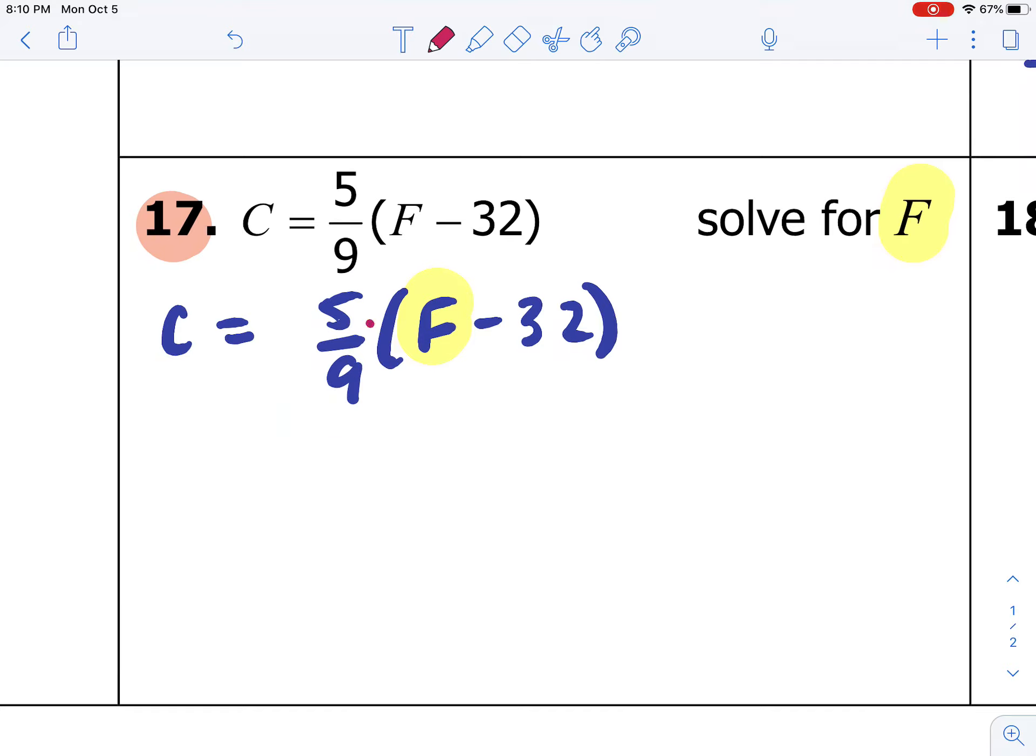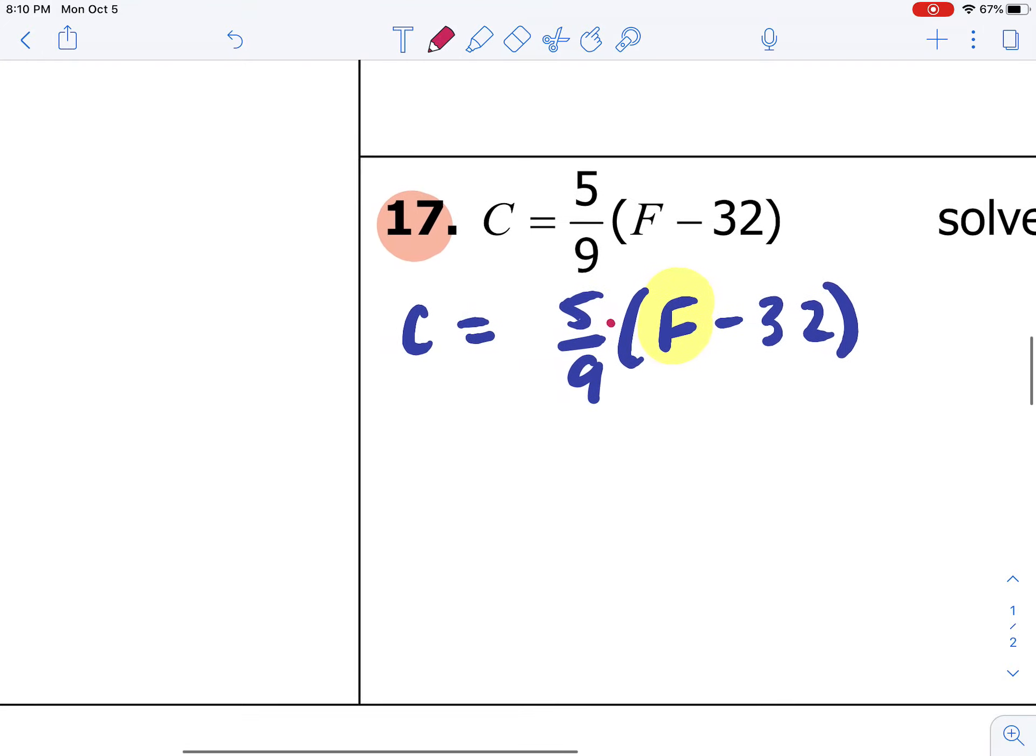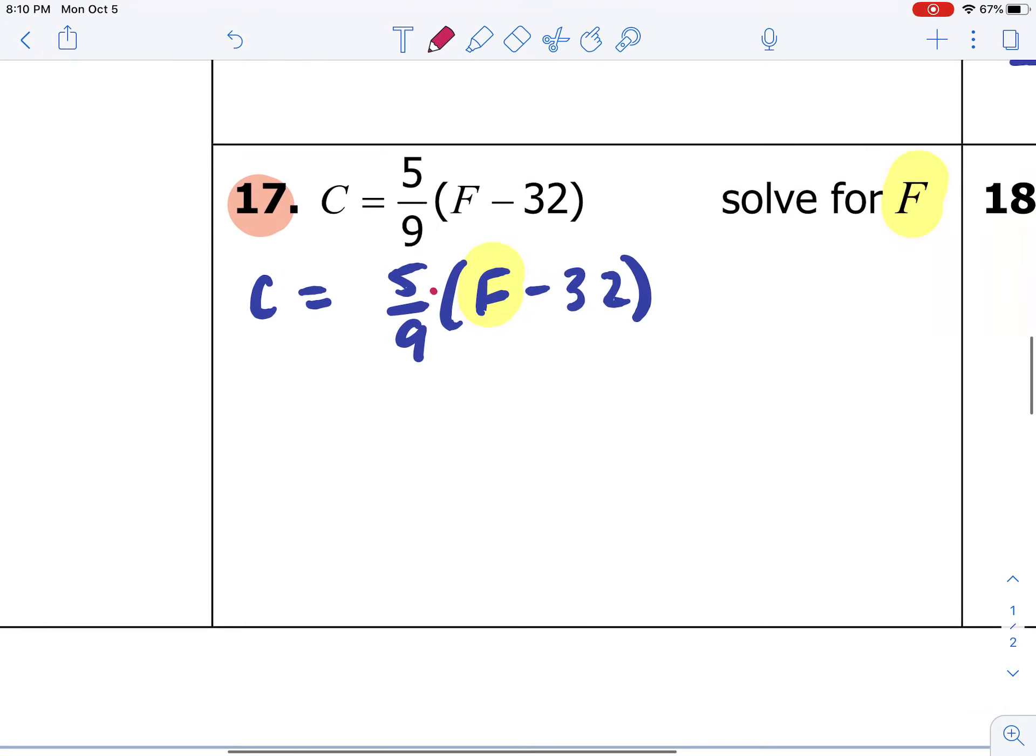What is happening with the 5 over 9 and F? Well, if I was going to simplify this problem, I would need to distribute 5 over 9 inside the parentheses. The distribution property is multiplication. So to undo multiplication, we need to divide both sides by 5 over 9.